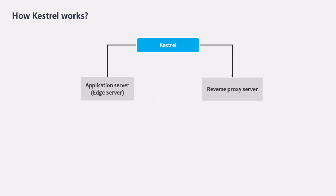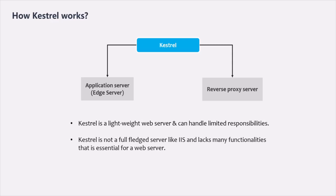During development, Kestrel does not have to handle much. Keep in mind that Kestrel is a lightweight web server and can handle only limited responsibilities. It is not a full-fledged server like IIS and lacks many functionalities essential for production, such as load balancing, URL rewriting, port sharing, response caching, and direct file transmission. Kestrel is well-suited for development since it doesn't have to handle huge request volumes or complex tasks like load balancing or URL rewriting.